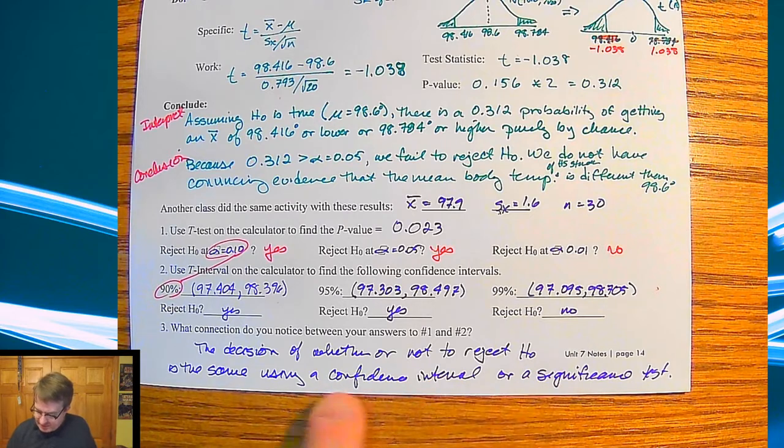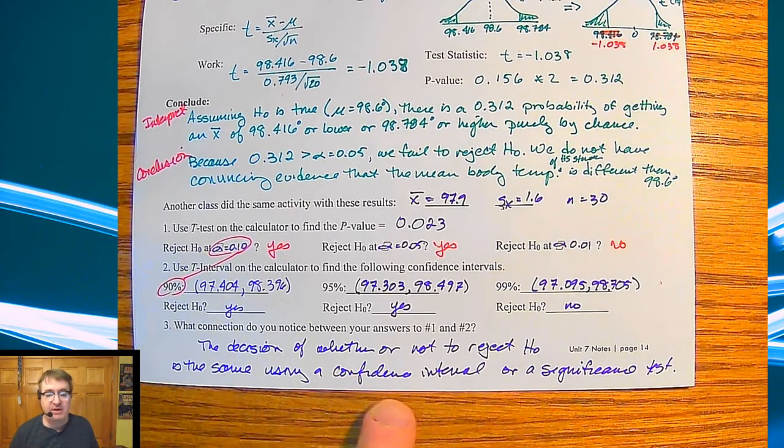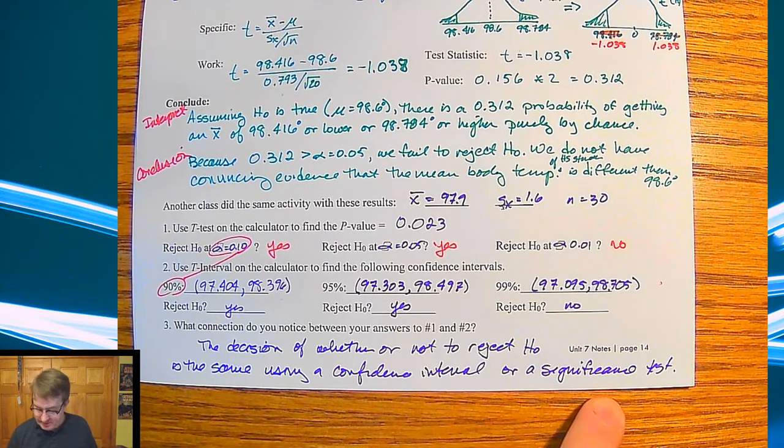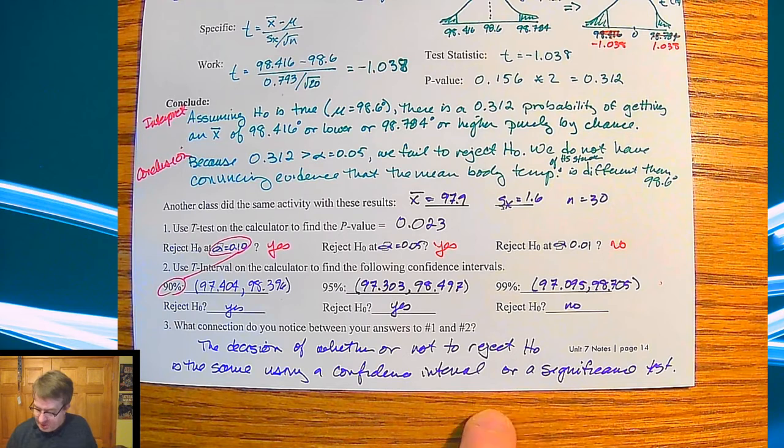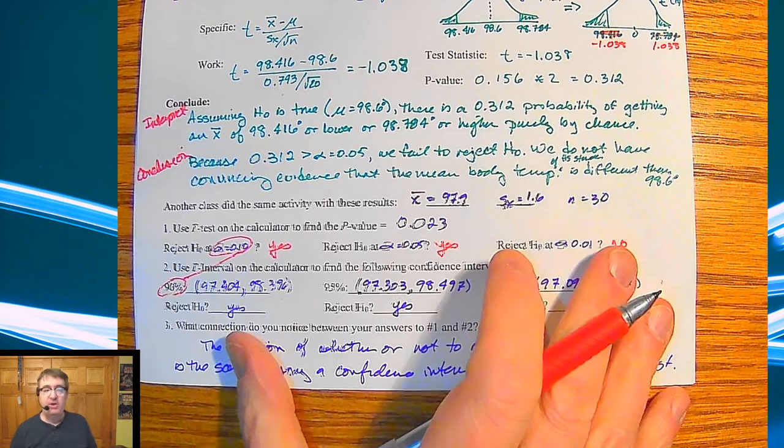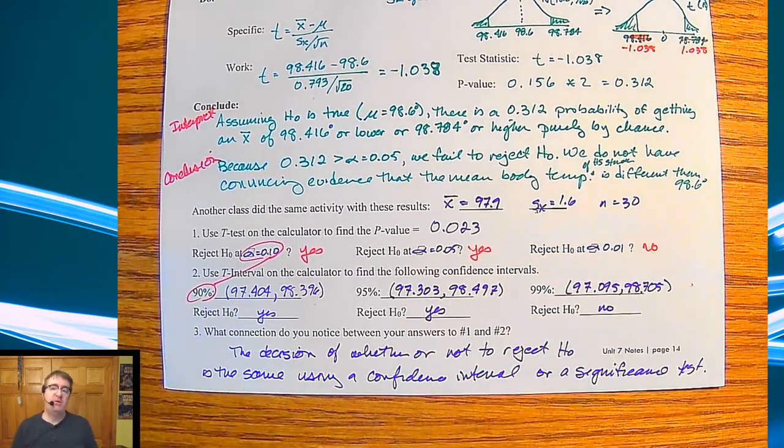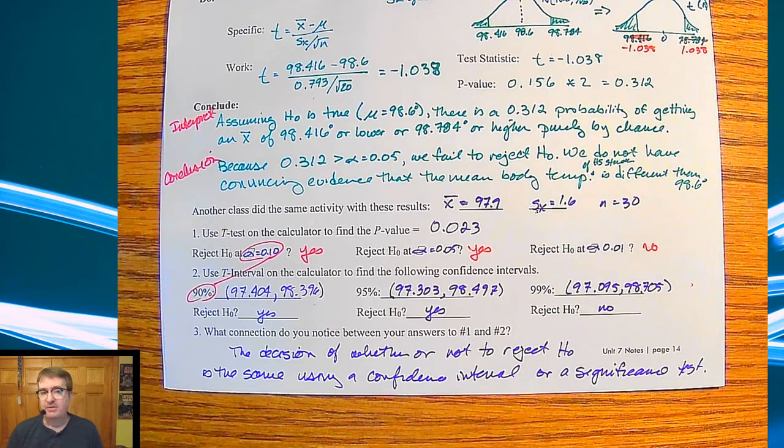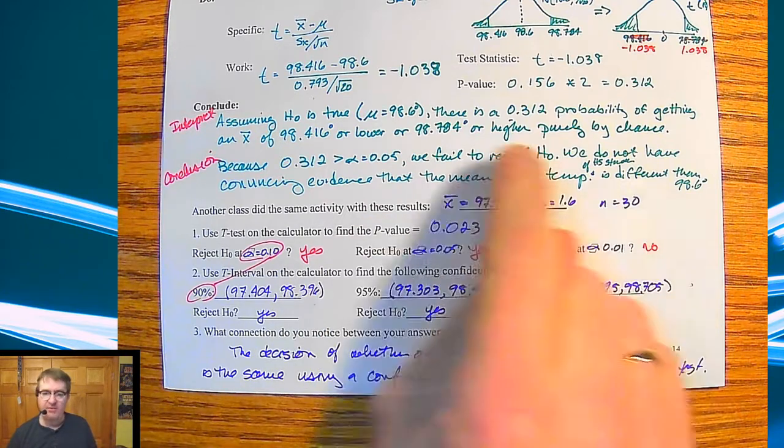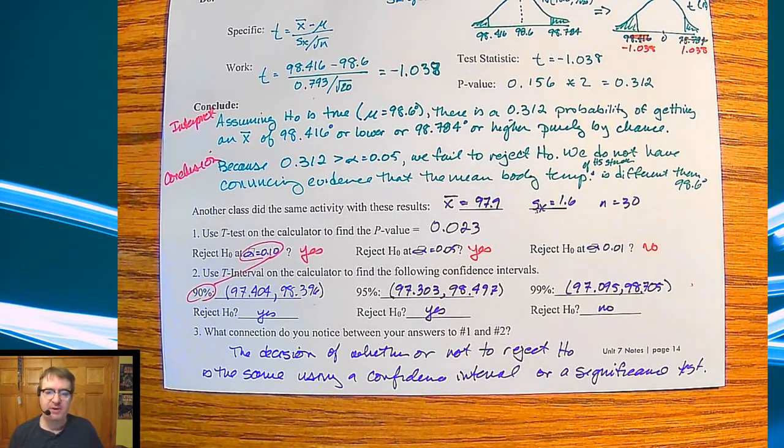So the decision of whether or not to reject the null hypothesis is the same using a confidence interval or a significance test. So if you get stuck, it's okay to use one or the other. Just make sure you read carefully enough to make sure that you're using it in the right context. So I hope that was helpful. We're going to formalize this on the other side. We're going to spell out our four steps, and we're going to kind of get a better idea of how these two are connected. I'll see you in a minute.